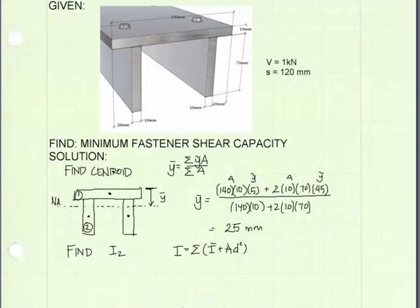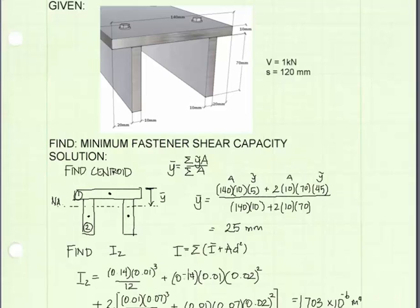The next thing I'm going to do is find the moment of inertia of the cross-section using the parallel axis theorem. I'm going to use the same three parts I used to find the centroid. The first two terms are for the top plate, piece one: its moment of inertia is base times height cubed divided by 12, plus A·d². The next two terms are for the leg pieces, piece two, doubled because there are two legs. This gives me my value for moment of inertia.